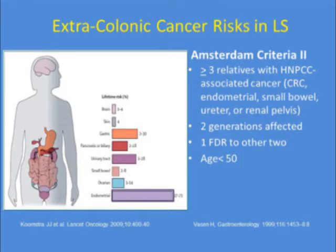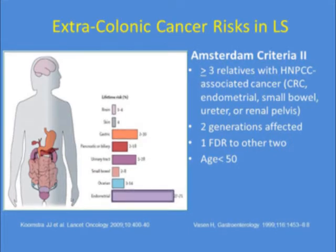Amsterdam Criteria 1 are very restrictive — they only include colon cancer. Lynch syndrome, which involves a germline mutation in a mismatch repair gene, is associated with those extracolonic cancers. Therefore, Amsterdam Criteria 2 were developed to incorporate those other extracolonic cancers.